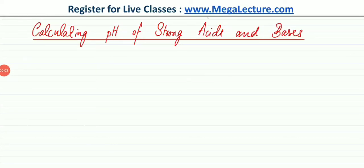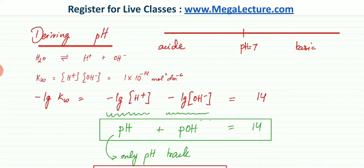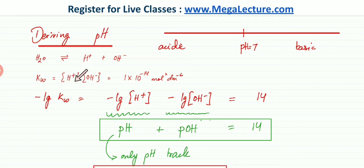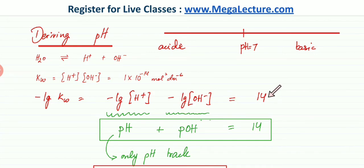We're going to learn how to calculate the pH of strong acids and strong bases. We've previously discussed that water ionizes. A quick recap: KW is the ionic product of water of the ions, and the value is 1 × 10⁻¹⁴. If you take the negative log of that, you get the expression pH + pOH = 14.